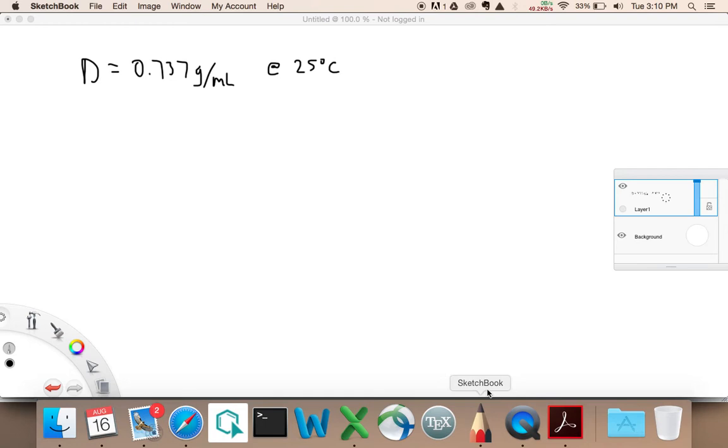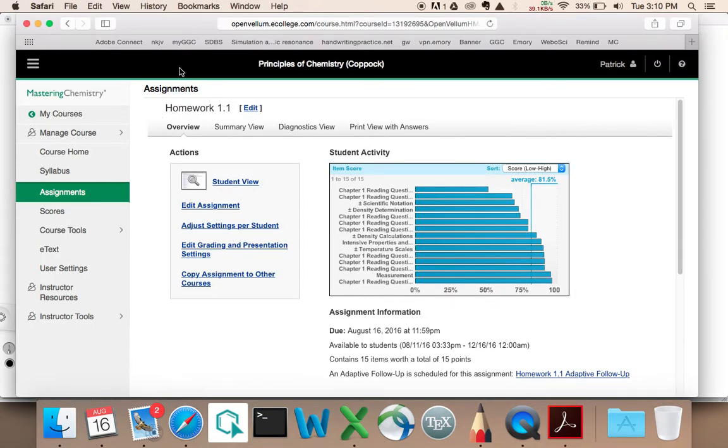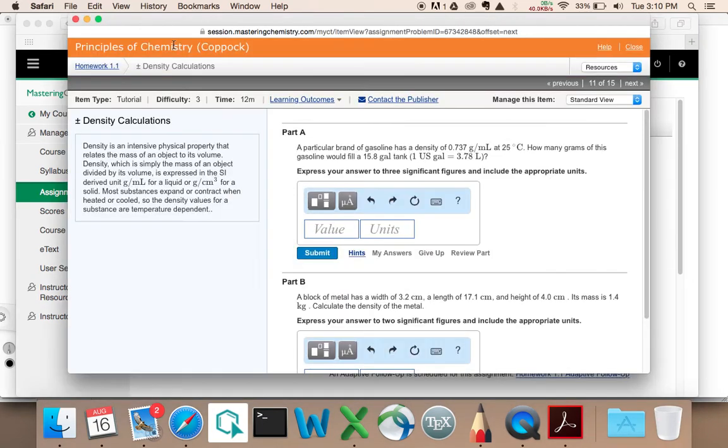So let's go here. By the way, every student who gets this question gets a slightly different size of a tank, and you might also be getting different densities. So the size of the tank was, let me say, well, okay, I can't read this. The size of the tank was, just a minute here, I lost it, was 15.8 gallons.